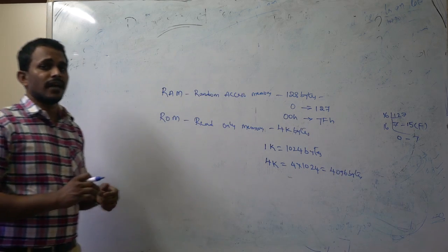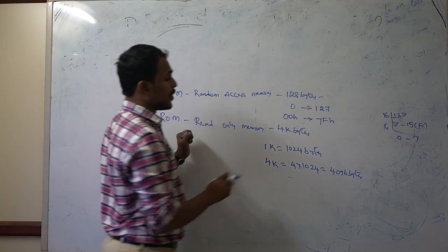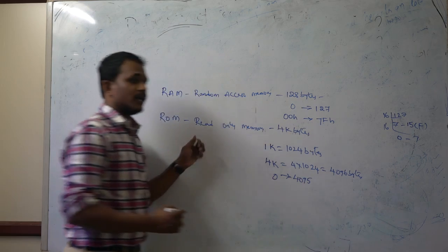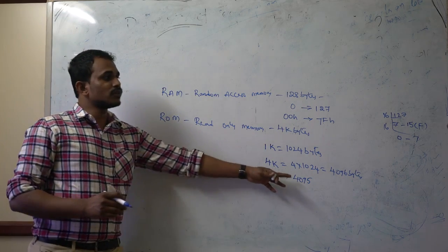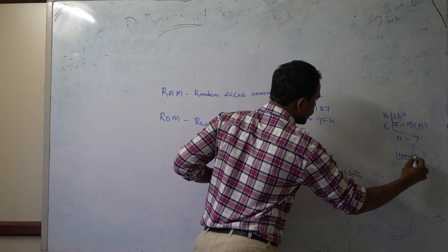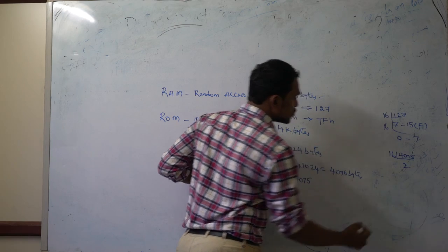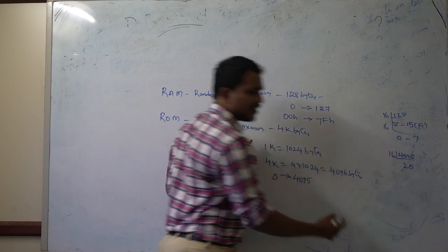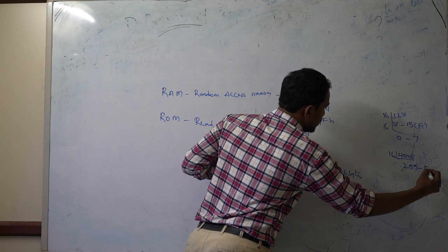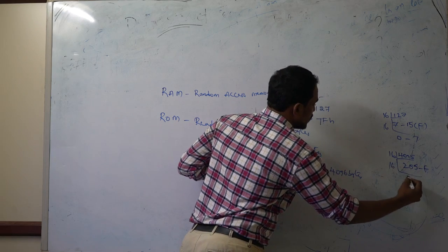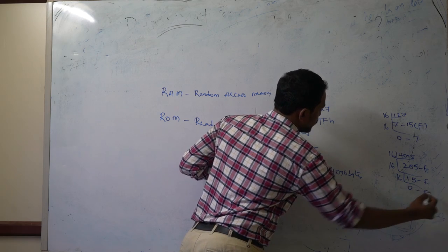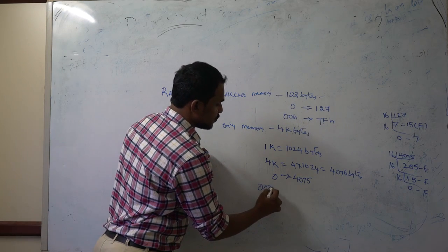For 4096 bytes of ROM, the decimal address range is 0 to 4095. Converting 4095 to hexadecimal by repeatedly dividing by 16 gives the result 0FFFH. So the ROM address range in hexadecimal is 0000H to 0FFFH.